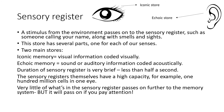Looking at the sensory register in more detail: there's an eye and an ear shown. The eye relates to the iconic store and the ear relates to the echoic store. A useful memory aid: echoic relates to the ear because you hear echoes through your ear; iconic — 'I' is an eye. The store has several parts, one for each of our senses. The two main stores we look at are iconic memory and echoic memory.